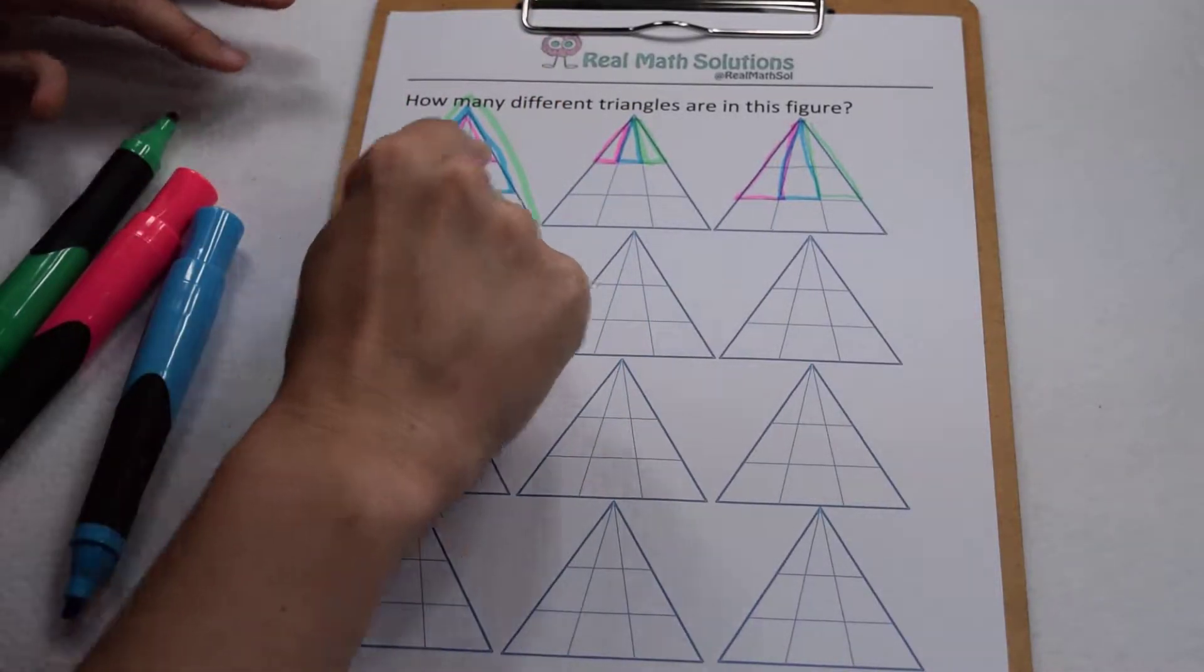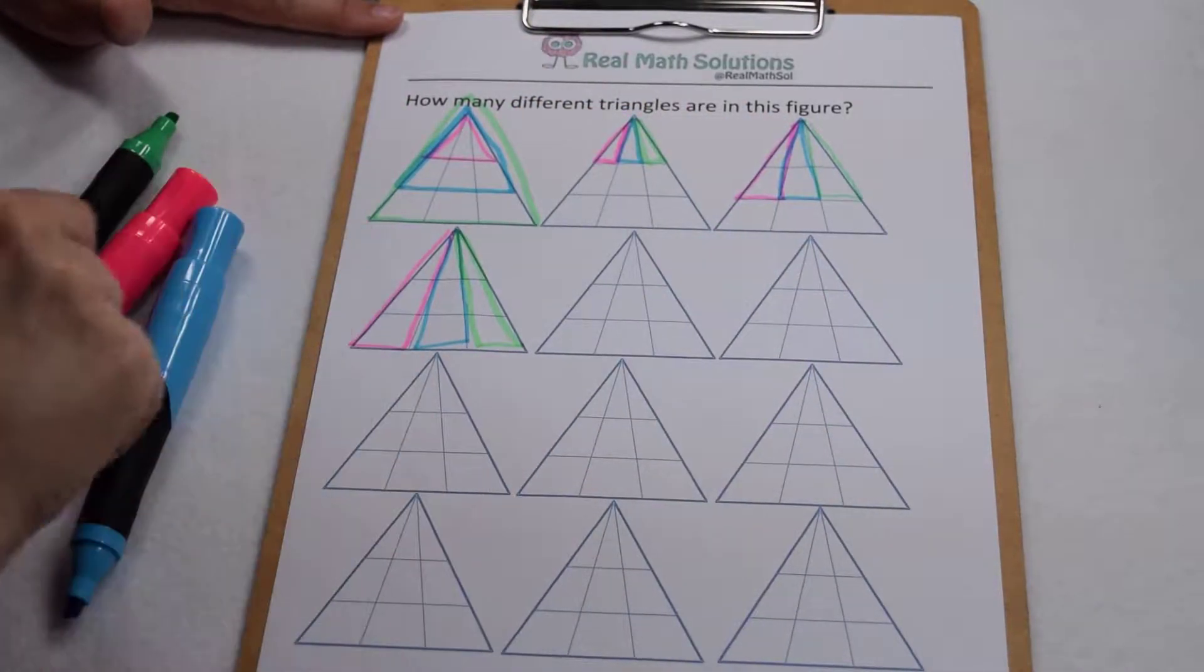Okay, so so far we have three, six, nine, twelve triangles.